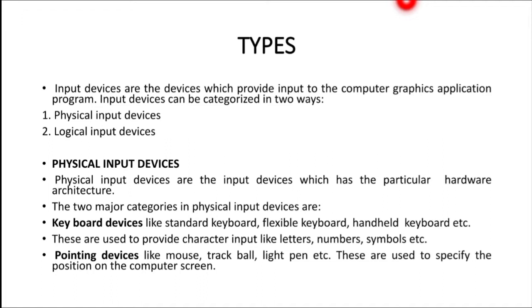Physical input devices are input devices which have particular hardware architecture. In simple words, physical input devices are devices you can touch and feel. The major categories are keyboard devices and pointing devices. Keyboards include the standard keyboard, flexible keyboard, handed keyboard, etc. Pointing devices — best examples being mouse, trackball, and light pen — are used to specify a position on the computer screen. Physical input devices can be characterized with respect to hardware; you can touch the mouse, you can touch the keyboard.